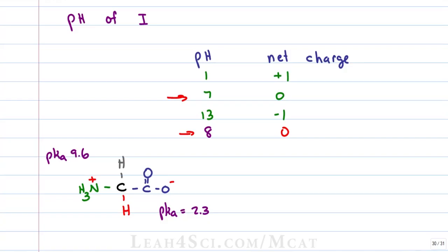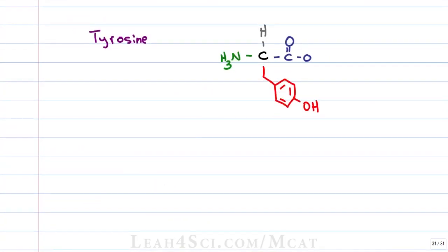That method works great when the amino acid has only two pKa values, but what happens if we have three? For example, in tyrosine we have the carboxy and the amine that can gain or lose a proton, but we also have an ionizable side chain where the oxygen can lose a hydrogen. If we have three pKa values, do we average all three, or only two — and if two, which two? Before showing you the math, let me show you the logic so you understand where the values come from.